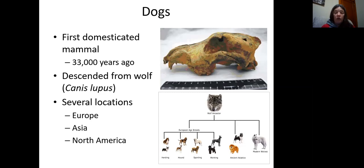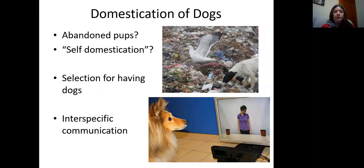Many dogs have jobs — herding our other domesticated animals, hunting dogs bred to help us capture food, and dogs bred purely for companionship. In terms of how dogs became domesticated, there are two hypotheses. One is that humans found some abandoned pups, took them in, reared them with humans and brought them into captivity that way.